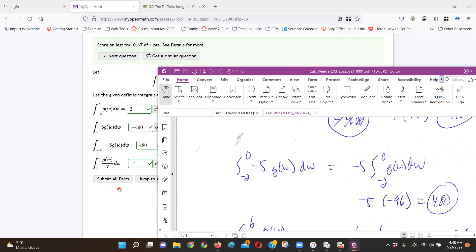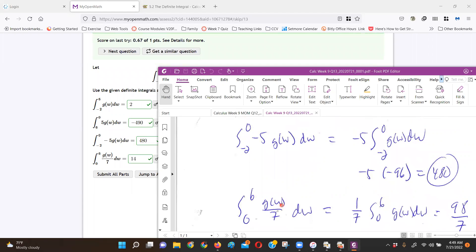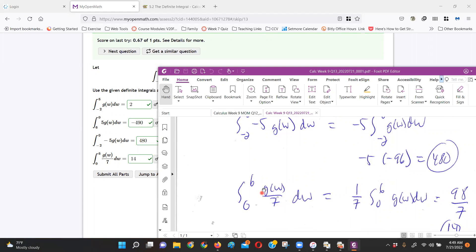And then this one's just another constant. Now, just because it's a fraction, people don't like that. But G of W over 7, isn't that the same as 1/7 times G of W? So I just brought the 1/7 out, took the 98, divided by 7. That easy, very useful, can simplify things in the future.